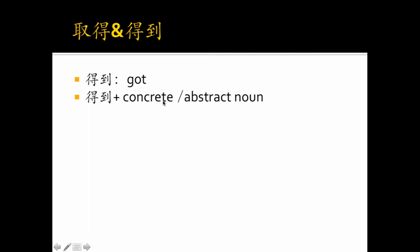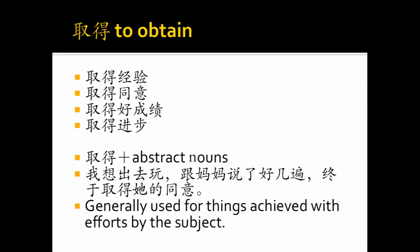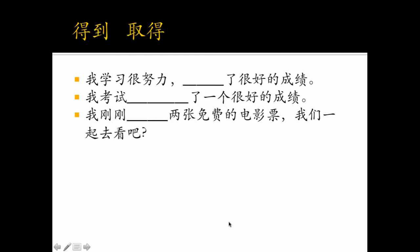得到 also means got, to obtain, but it is followed by concrete or abstract nouns. For example, 得到一个苹果,得到一个机会—机会, opportunity. So it doesn't have the meaning like 取得. It doesn't denote anything like you try to achieve the effect, the effort, try to achieve with the efforts by the subject. It doesn't have this meaning.